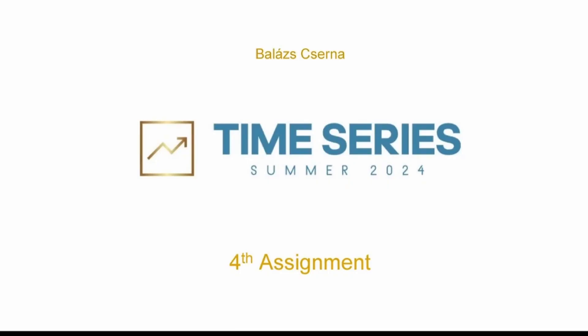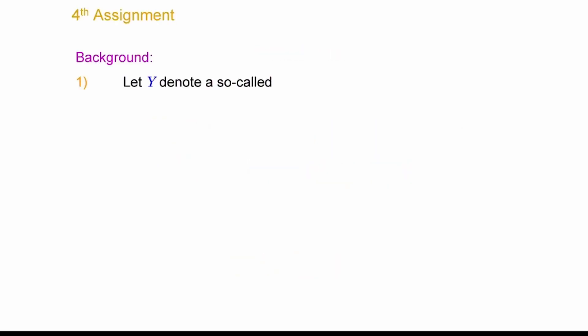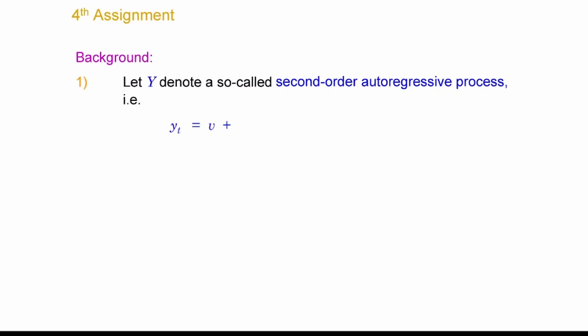The fourth assignment is going to be about a second-order autoregressive process. A second-order autoregressive process looks like this: you have a constant, which you're supposed to have in your regression. In this case it's going to be important because that affects the matrix of predictors. The matrix of predictors is going to be important.